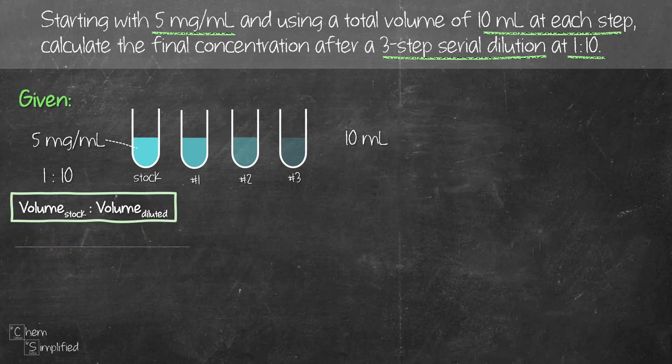Basically, the dilution factor is a ratio of the volume of stock solution to the volume of diluted solution. So in this case, since we are preparing 10 mL at each step, on the first step of our serial dilution we take 1 mL of the stock solution and add 9 mL of deionized water, so together that forms 10 mL of solution in the first test tube.